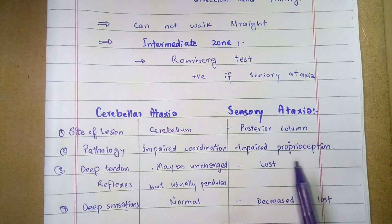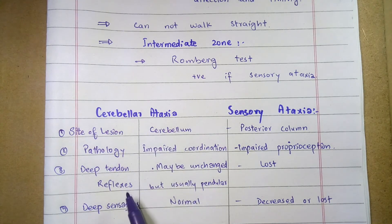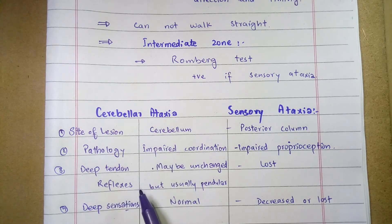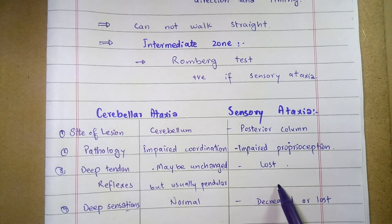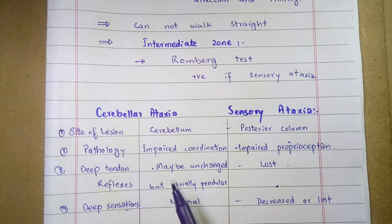For deep tendon reflexes: in cerebellar ataxia, reflexes are not lost — they may be changed but are usually pendular. In sensory ataxia, deep tendon reflexes are lost because the reflex arc is broken down.